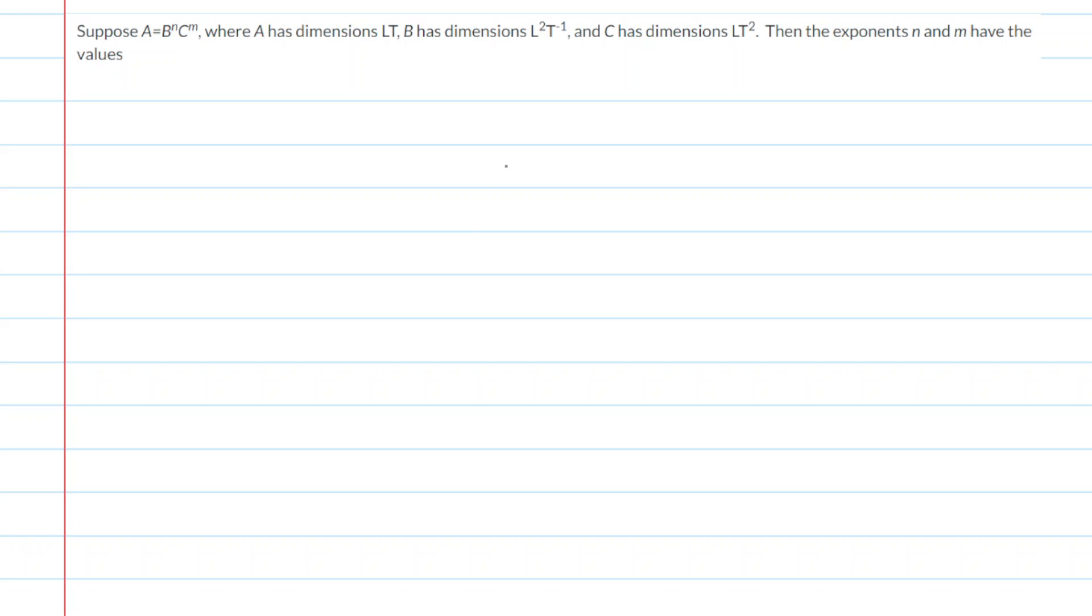So, our goal in this question is to figure out the values of the exponents n and m, and we can begin to do that by recopying the given equation. We then are told that a has the dimensions of length times time. So for a, we're going to go ahead and plug those dimensions in in just a moment.